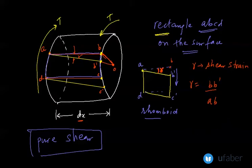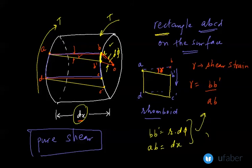If you look at the value for BB dash, this small angular displacement is d phi on this face, and this is a small arc which is created with radius R. So the length of the arc BB dash will be R into d phi, and the length of side AB is dx. If you plug these two values in, gamma would become R into d phi upon dx. So this is the value of the shear strain.